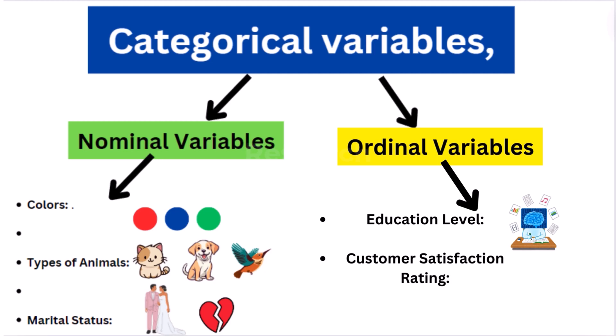For examples: Education level - high school, bachelor's, master's, PhD. Customer satisfaction rating - very dissatisfied, dissatisfied, neutral,